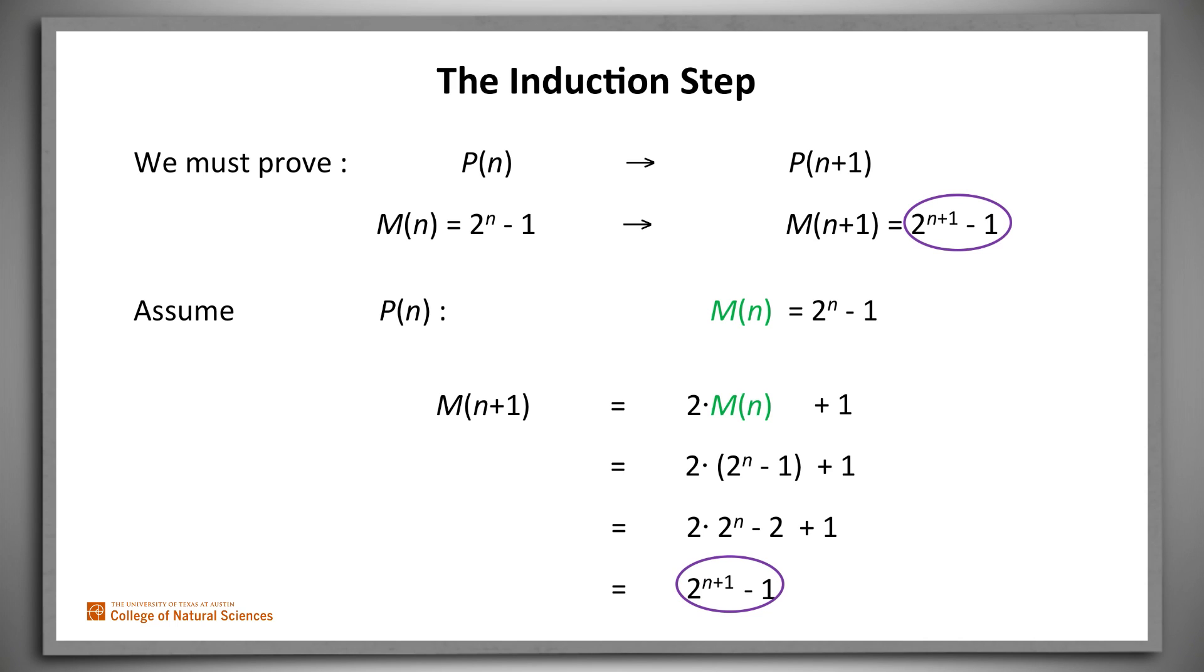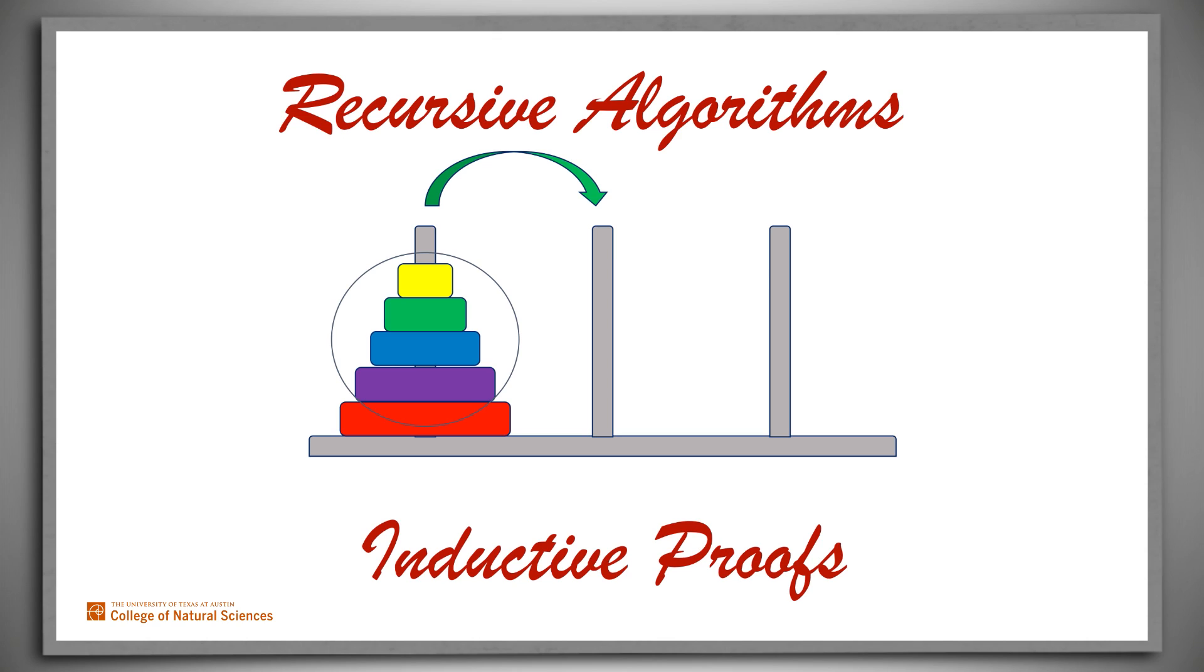We've finished the proof. If P of n is true, so is P of n plus 1. And combined with the proof of the base case, we have that for all n greater than or equal to 1, m of n is equal to 2 to the n minus 1. This proof was really easy. And it was easy because there was a natural correspondence between recursively defined algorithms and inductive proofs.